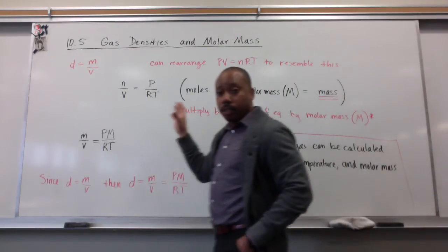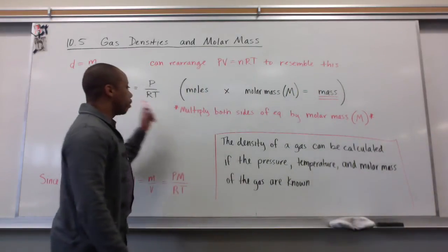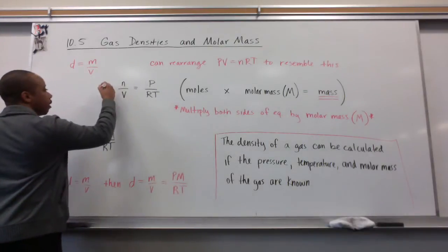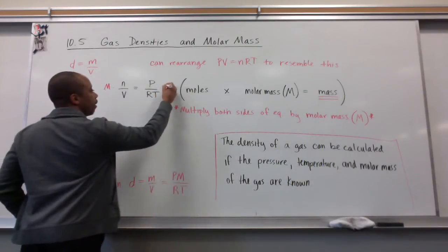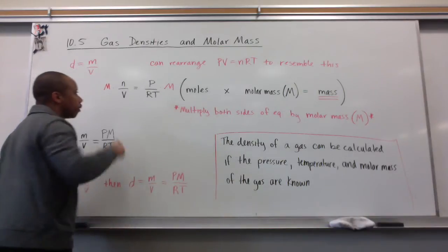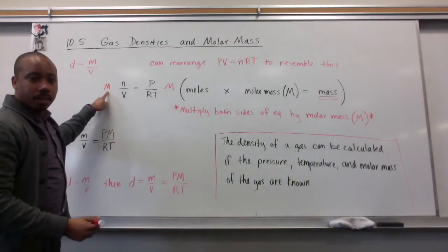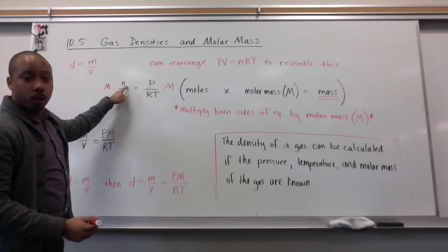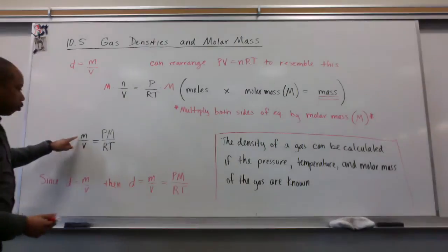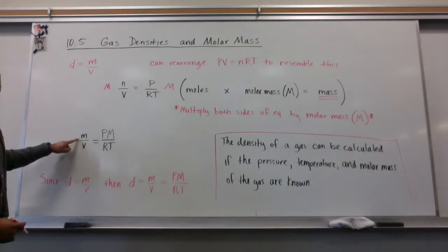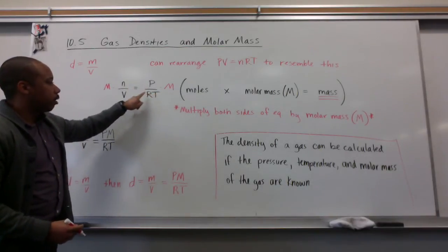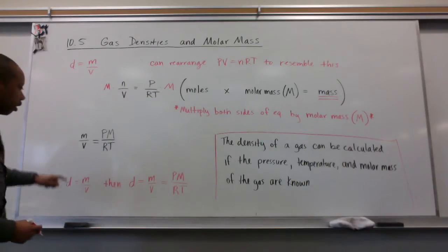If I apply this to this equation, meaning I multiply both sides of my equation by the molar mass, molar mass, which is uppercase M, times n, your moles, gives you mass. So what we have down here, your volume stays the same, and I have P times the molar mass, divided by R, divided by T.